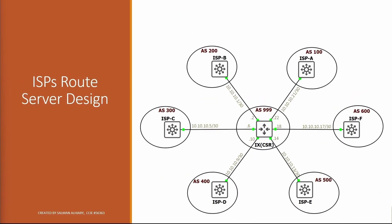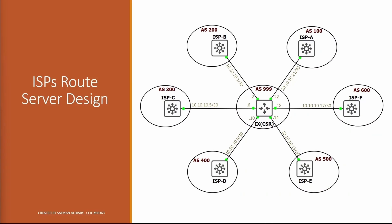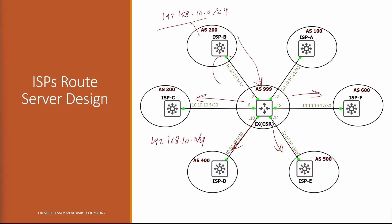Using route server design, it will be like this — and this one I will configure in the lab. Here we have a route server in the middle, each ISP router connected to that internet exchange or route server. Let's say ISP B advertises subnet 192.168.10.0/24 to the IX or the route server. Then that route server will send it to all other peers, if no policy prevents that. Each of these ISP switches will see 192.168.10.0/24 with the Next Hop being the IP address belonging to ISP B.